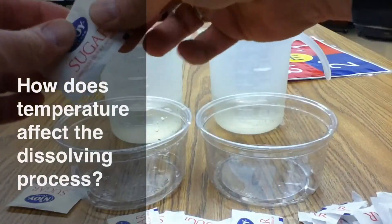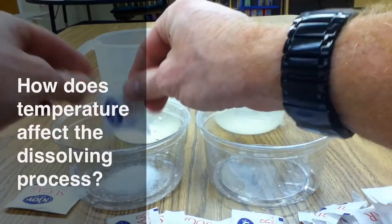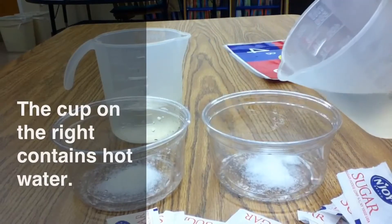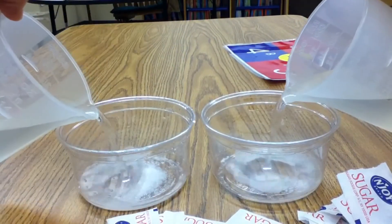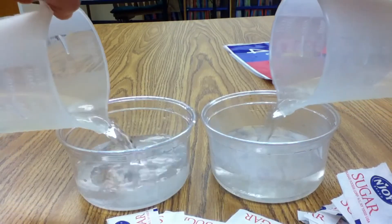Next, we'll investigate how the temperature of the water affects the process of dissolving the sugar. The cup on the right contains hot water. The cup on the left contains water at room temperature.